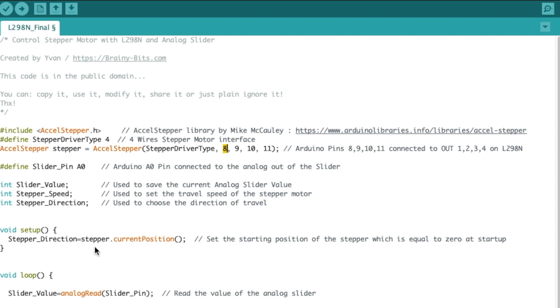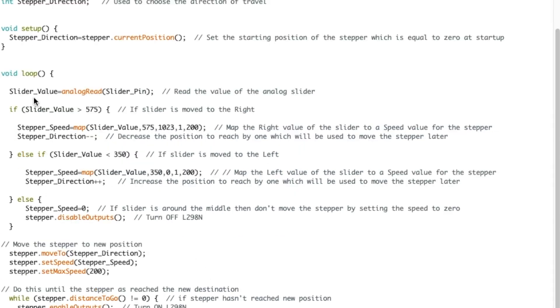And then we have the main setup. Very easy. Stepper direction is equal to the stepper dot current position. That's an AccelStepper command. The current position at the beginning is zero. So I could have said equal zero, but I wanted to use the actual command of the AccelStepper library. And then we get to the main loop.